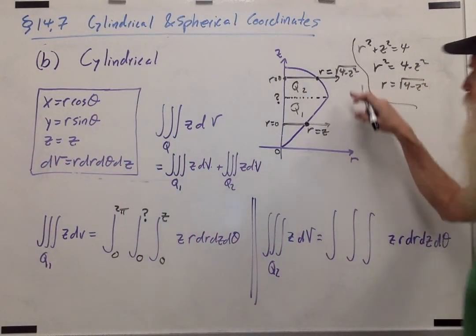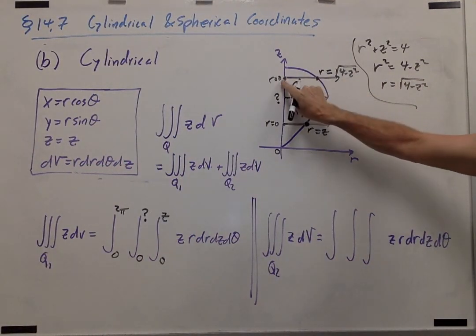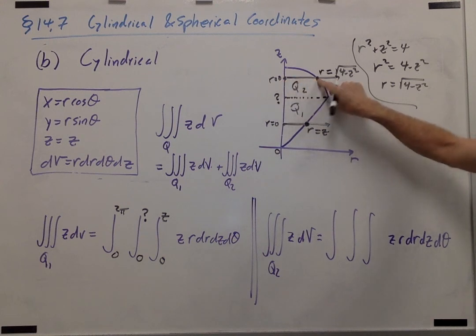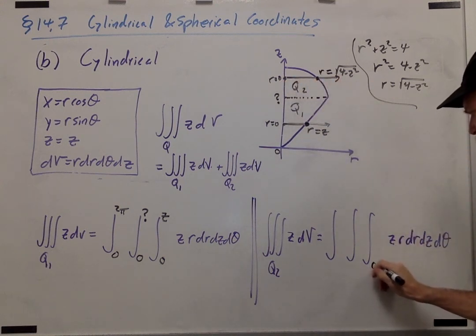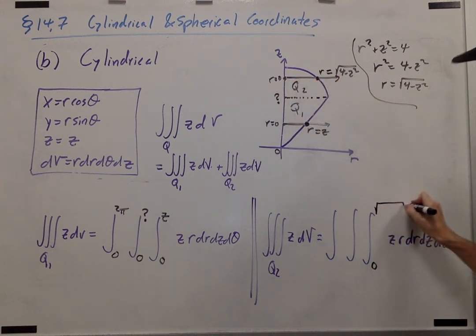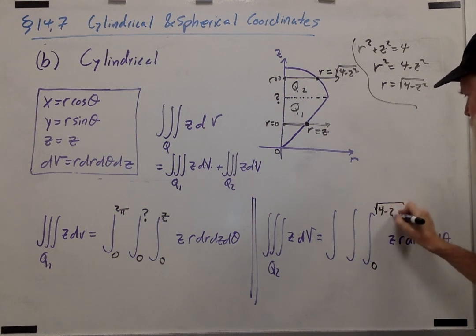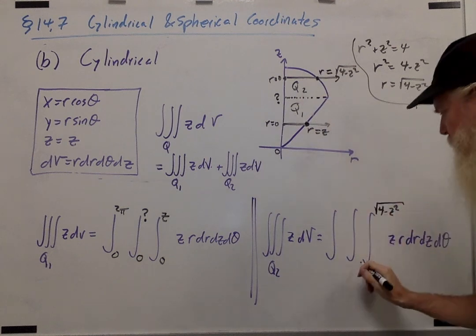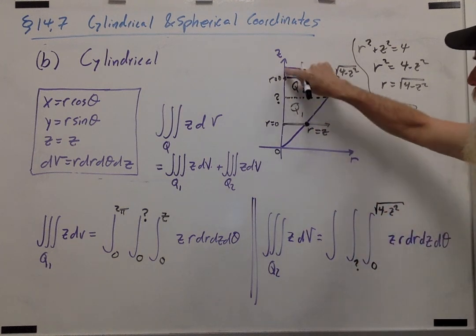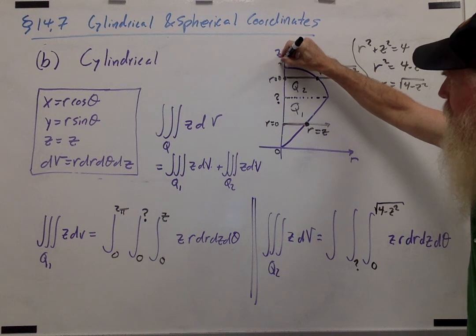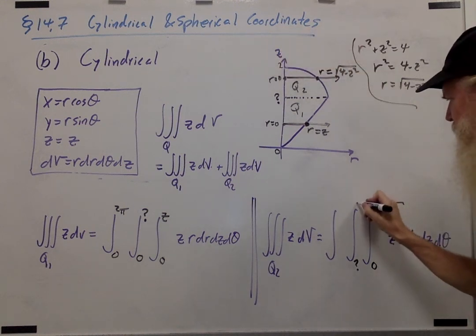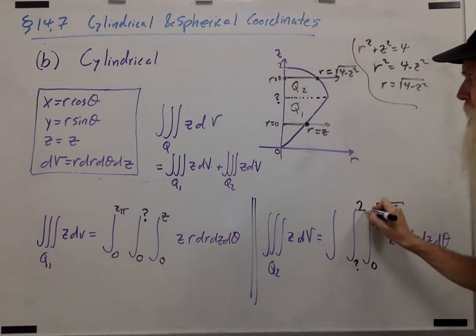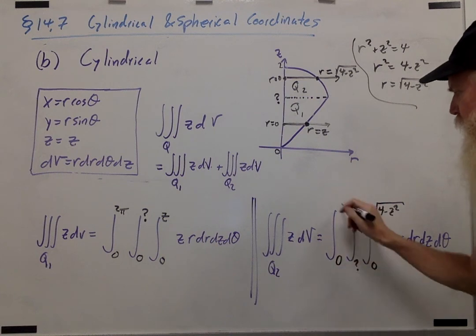We can also fill things out for Q2. For Q2, r goes from 0 to the sphere, so r goes from 0 to the square root of 4 minus z squared. z is going to start at this number that we haven't figured out yet and continue up to 2. Remember that 2 is the radius of the sphere. And theta goes from 0 to 2 pi.